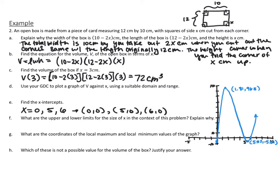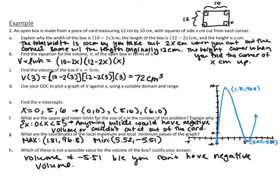Parts F through H ask questions about the graph in context. The lower limit for x is just above 0 — if x were 0, you wouldn't be cutting anything out and couldn't fold a box. The upper limit is 5, because if x equaled 5 you'd cut the 10 cm side in half with nothing left to fold. The local maximum is at (1.81, 96.8), and the local minimum at (5.52, -5.51). The local minimum is not possible since we can't have negative volume. Cutting x = 1.81 cm would maximize the box volume.